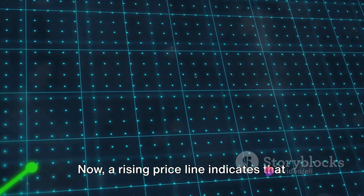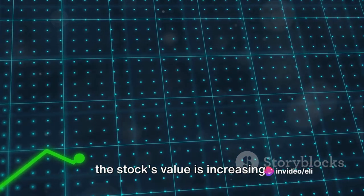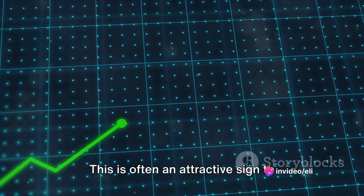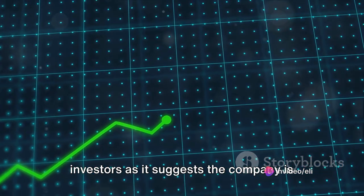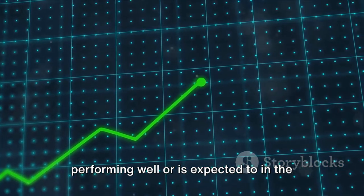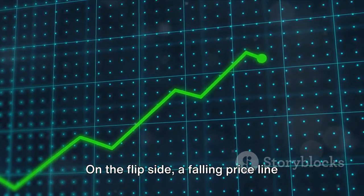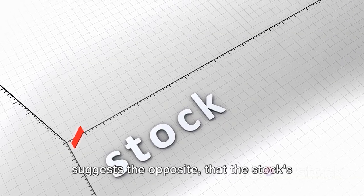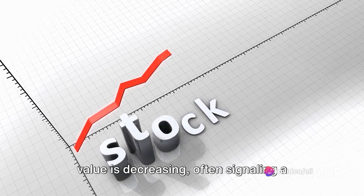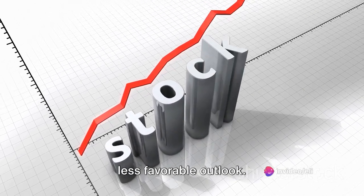A rising price line indicates that the stock's value is increasing. This is often an attractive sign to investors as it suggests the company is performing well or is expected to in the near future. On the flip side, a falling price line suggests the opposite, that the stock's value is decreasing, often signaling a less favorable outlook.